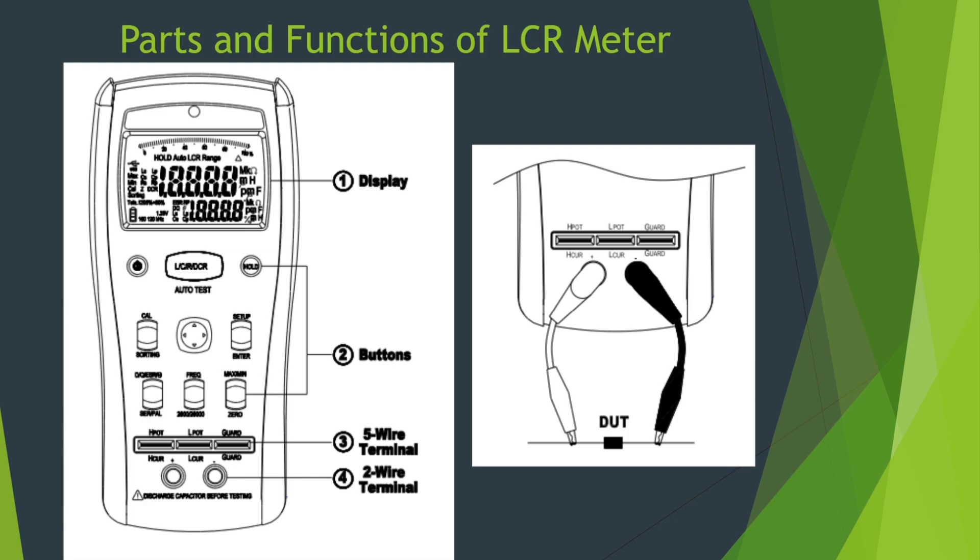If you press it for more than 2 seconds, it will be on auto detect mode. This is the calibration button. This is the frequency test button. This is the series or parallel configuration button. This is the maximum or minimum button. This is the 5-wire terminal. This is the 2-wire terminal. In these two terminals, the probes are connected like this and the component whose value has to be measured is connected like this.